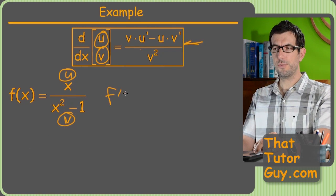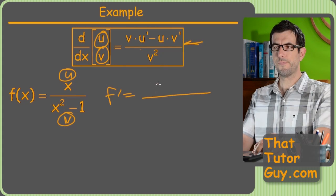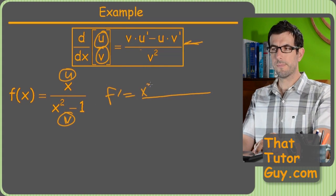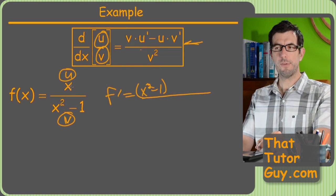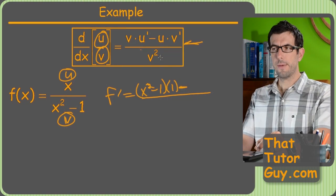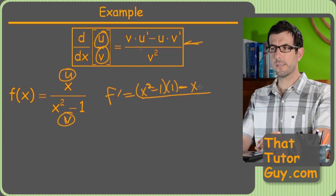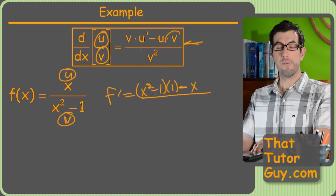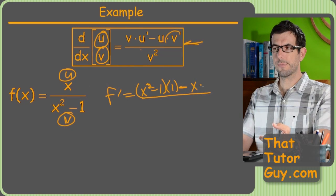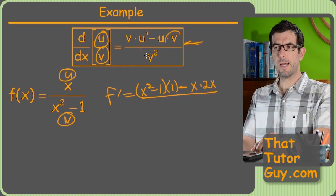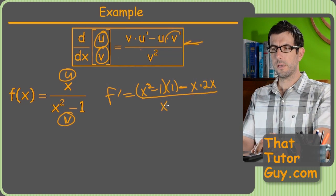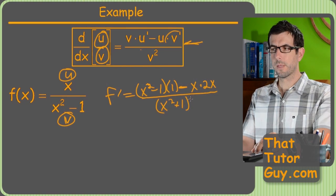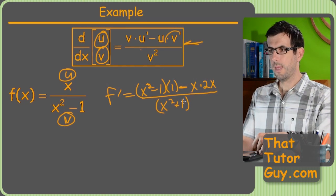So without further ado, plug and chug. It's going to be a giant fraction. First we put v, so that's x squared minus 1, and then multiply that by u prime. Derivative of x is just 1. Then we subtract u, which in this case is x, times v prime, which is the derivative of x squared minus 1, which is just 2x. And downstairs, you read that right, it's just the original denominator squared. So x squared minus 1 squared.